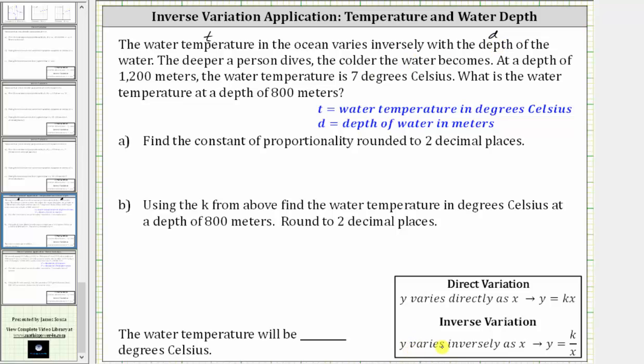And if we're told that Y varies inversely as X, we use the equation Y equals K divided by X, where K is the constant of proportionality. But in our case, because we have T varies inversely with D, we will be using the inverse variation equation T equals K divided by D.